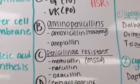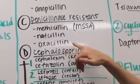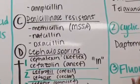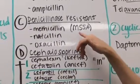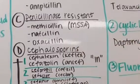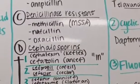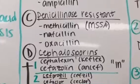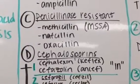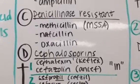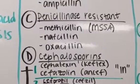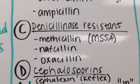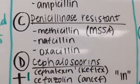Then we have our penicillinase-resistant penicillins: methicillin, nafcillin, and oxacillin. Methicillin is what we think of when thinking of methicillin-sensitive Staph aureus — that's a specific type of bacteria we're treating. Nafcillin and oxacillin go together in the sense that one is how we classify resistance, one is used to see if the bacteria is resistant, and the third is the one we actually use to treat.